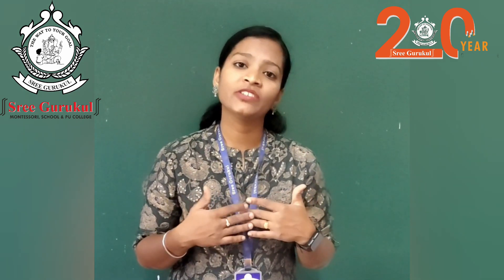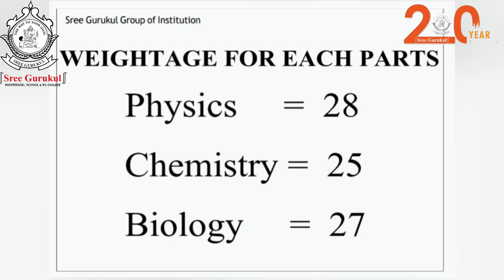I am going to share 4-mark, 5-mark, and 3-mark questions with you. The same areas and questions arise frequently, so we can predict these in the board examination. This paper is divided into three parts: Part A Physics with 28 marks, Part B Chemistry with 25 marks, and Part C Biology with 27 marks.